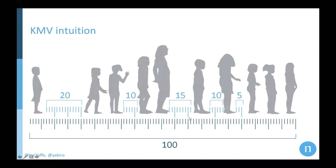If we take the average of these distances, we see that the average distance is 10. And if we take 100 divided by 10, we estimate that there are 10 people standing in the line, which is a much better approximation.